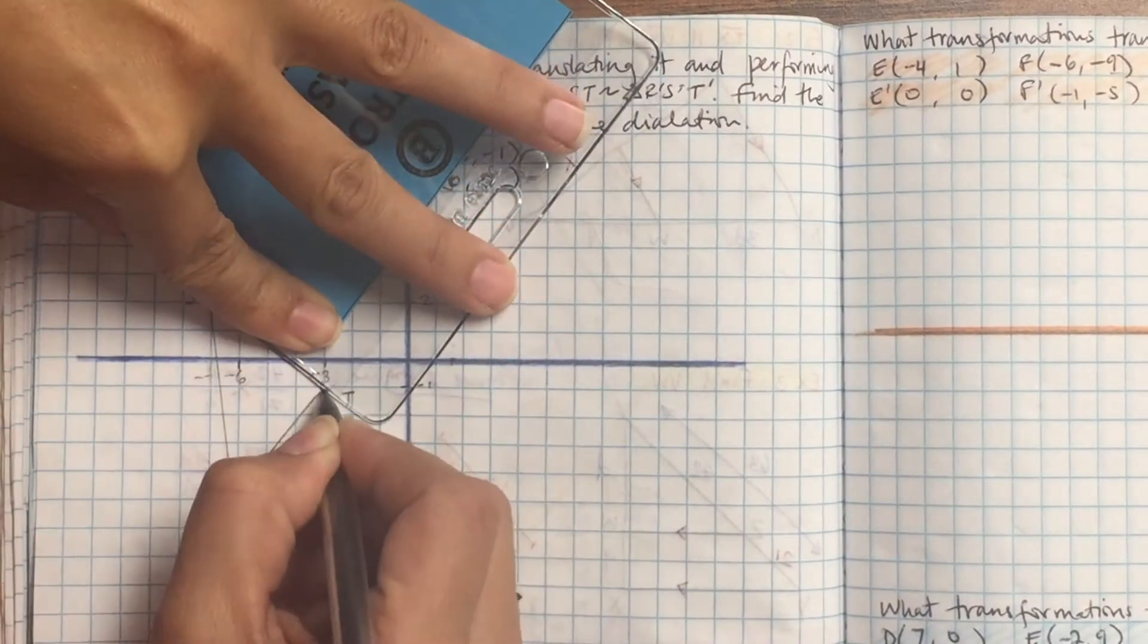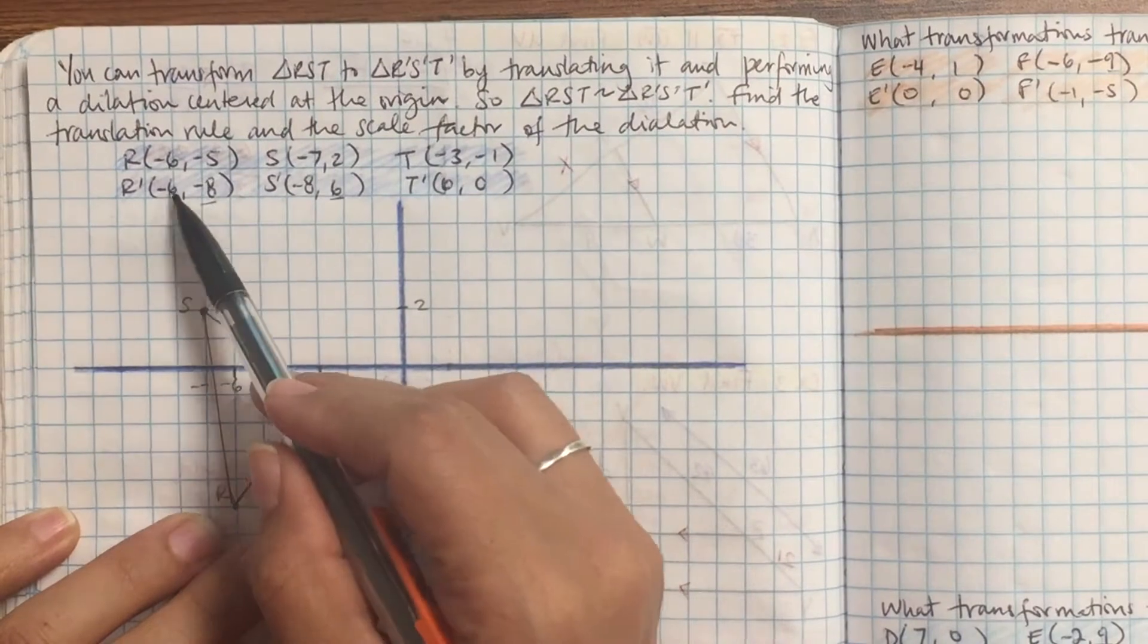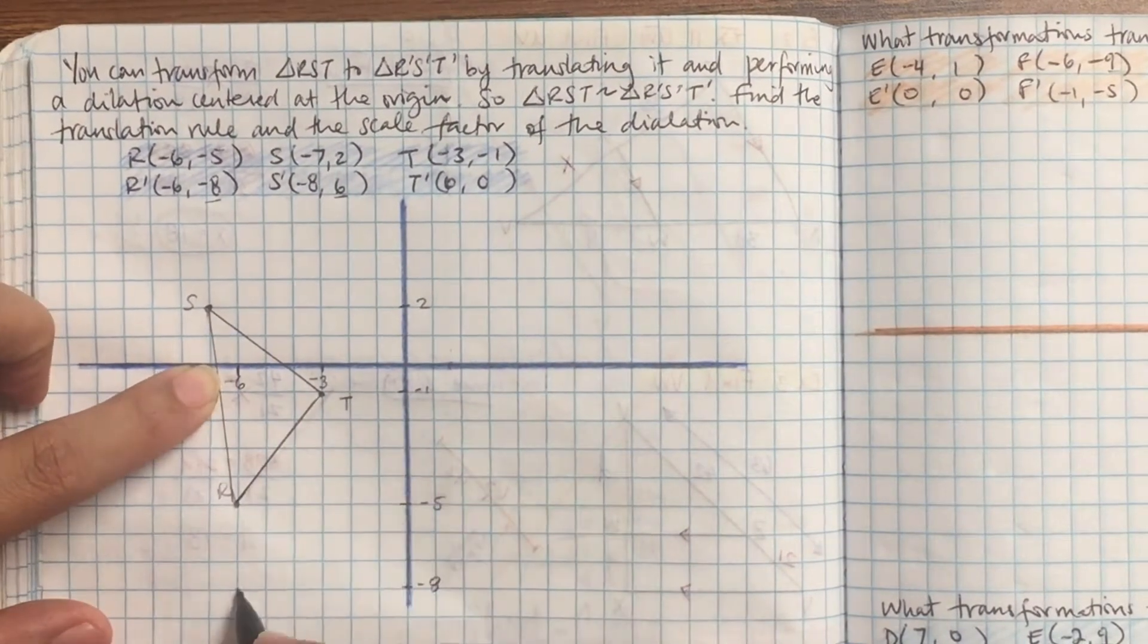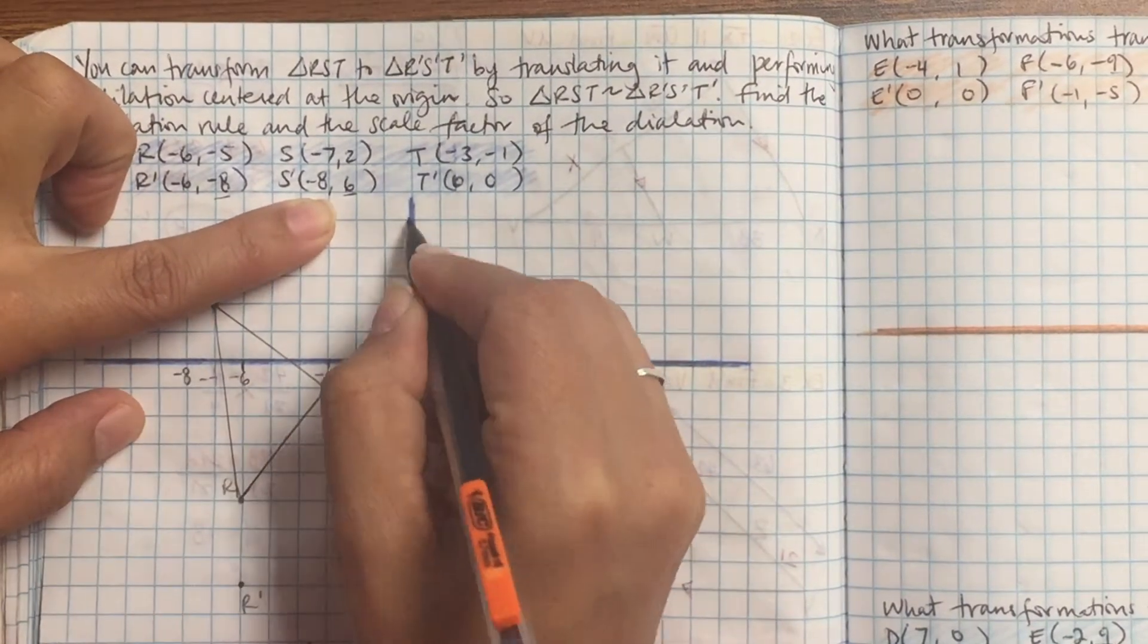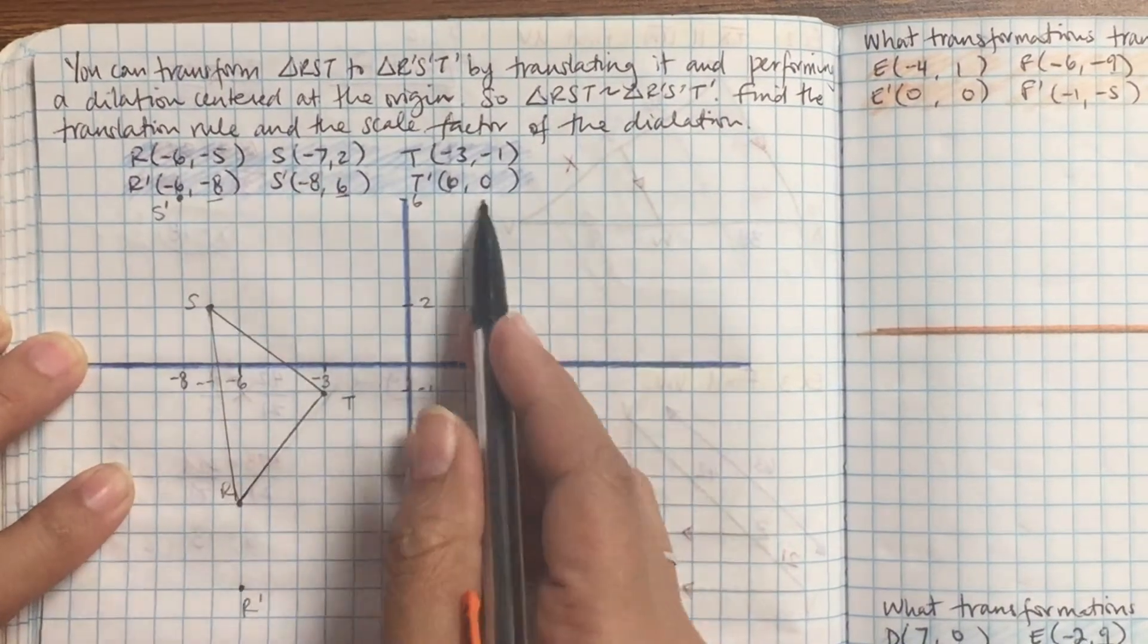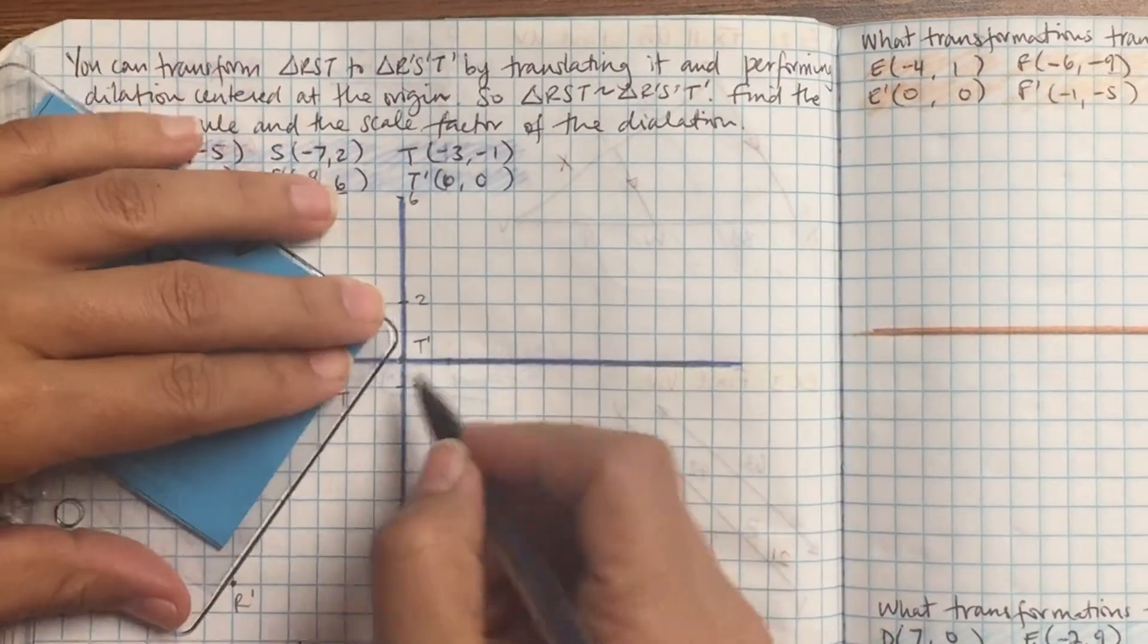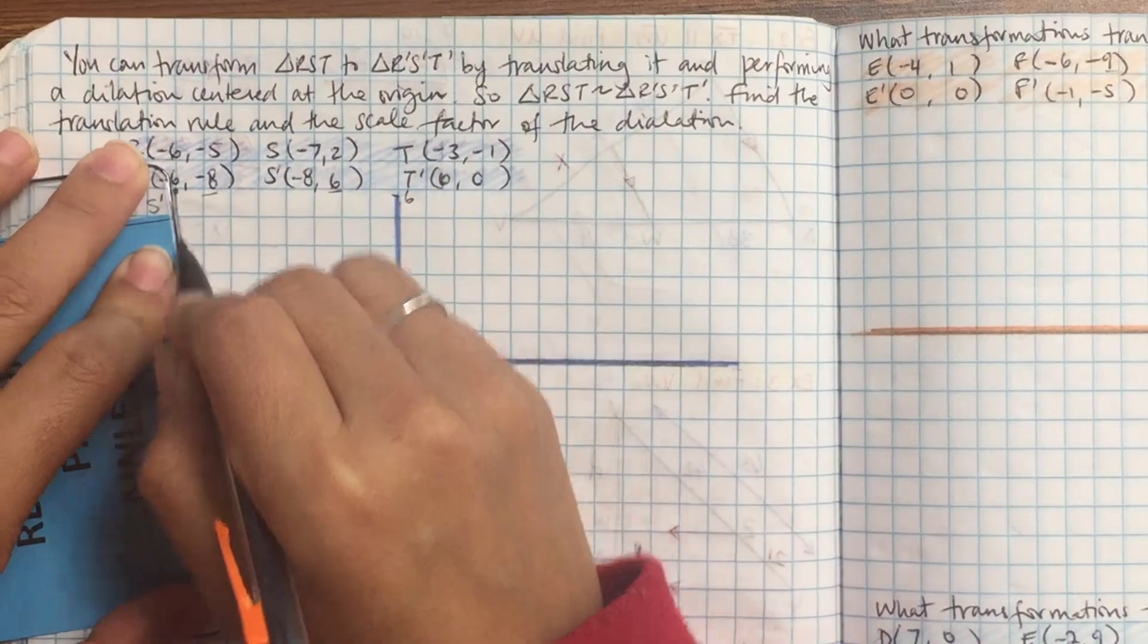R prime is negative 6 negative 8, so left 6 down 8. S prime is negative 8, 6, left 8 and up 6. And then T prime is 0, 0. I'll go ahead and join those out. So basically we're asking what happened from the original to now this new shape that we have.